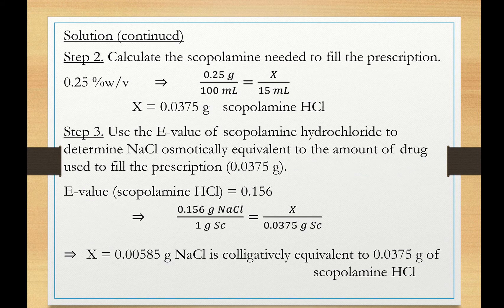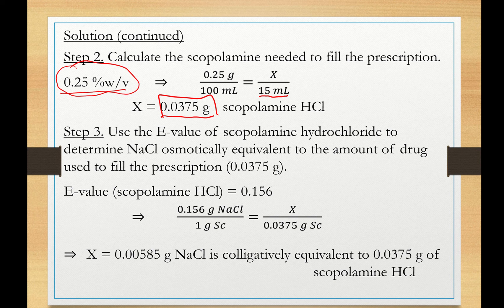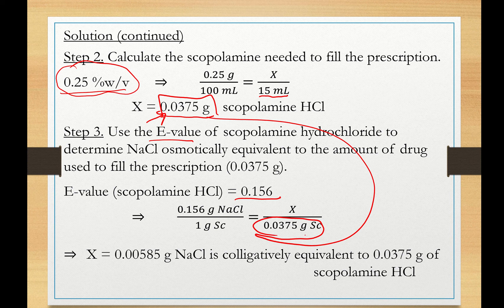We are now ready to use these E-values. First, using the E-value for scopolamine: we calculate the mass of drug in the prescription. The concentration is 0.25% w/v in 15 mL, giving 0.0375 grams of scopolamine. Using the E-value of 0.156, we determine that 0.00585 grams of sodium chloride is osmotically equivalent to this amount of scopolamine hydrochloride in the prescription.